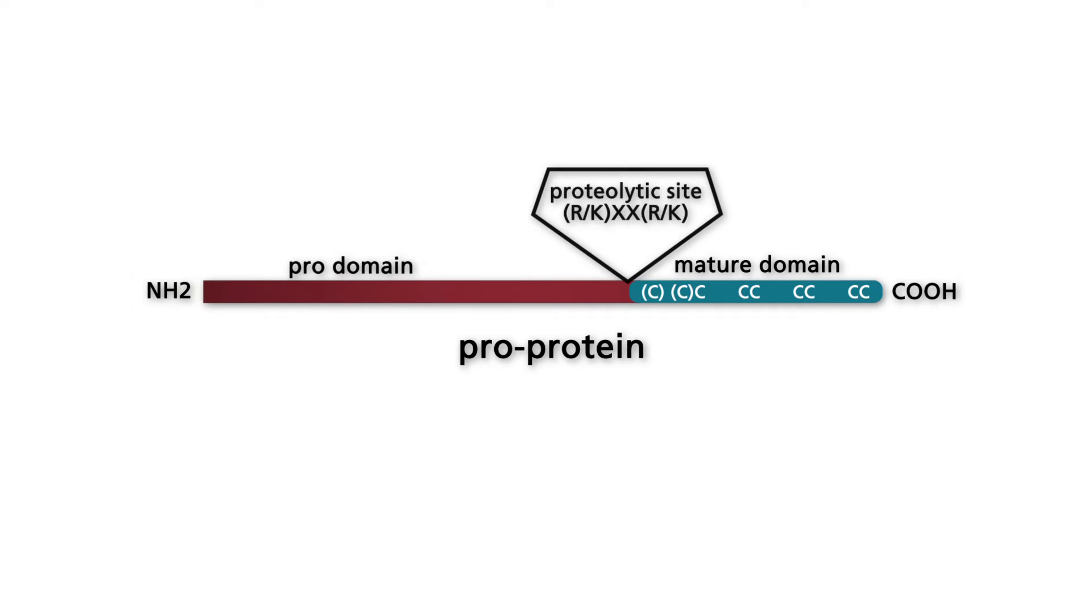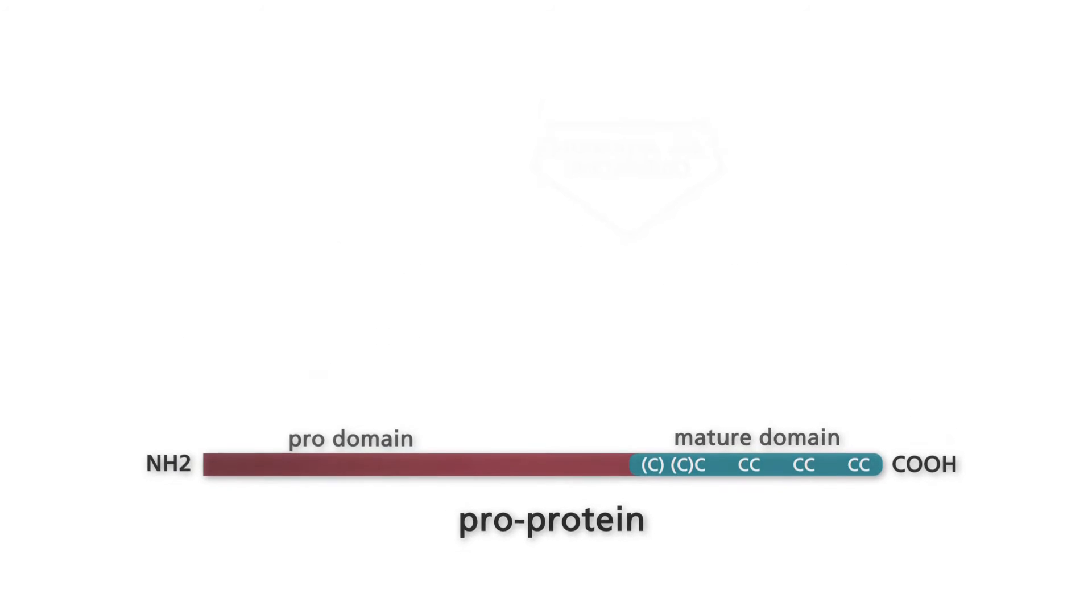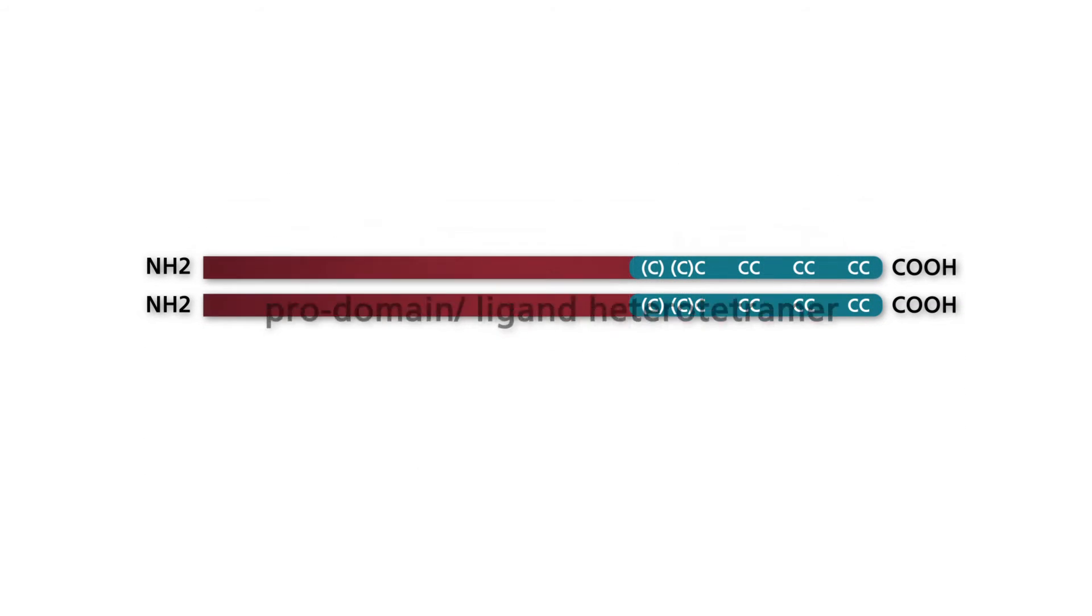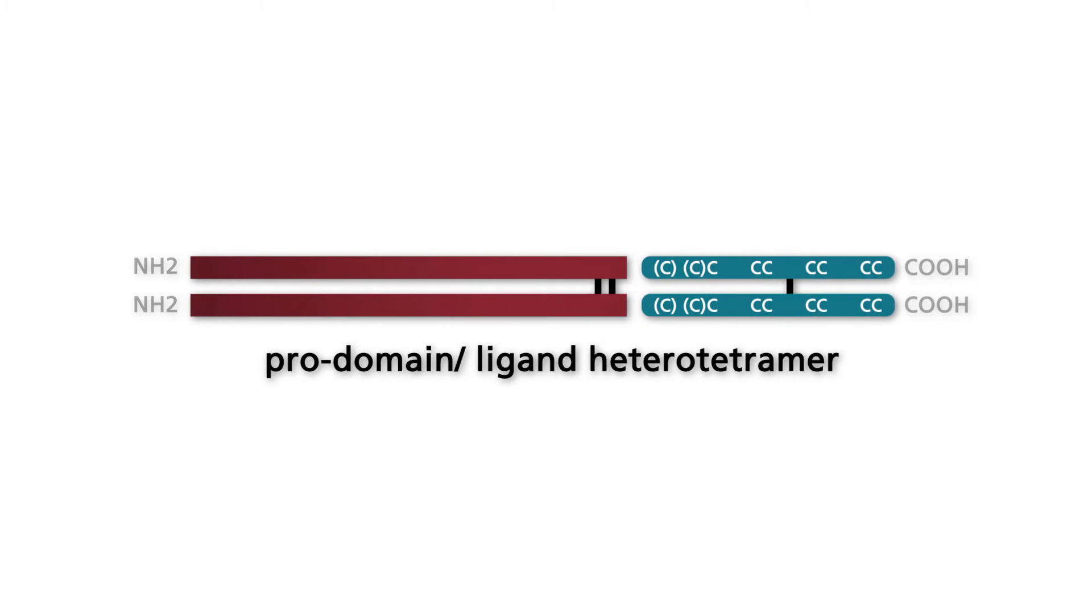A proteolytic cleavage site is located between the pro domain and the mature domain. TGF betas and other members of the TGF beta superfamily are synthesized as dimers. The TGF beta pro-peptide remains bound to the mature TGF beta peptide after the bond between the pro domain and the mature domain has been cleaved.